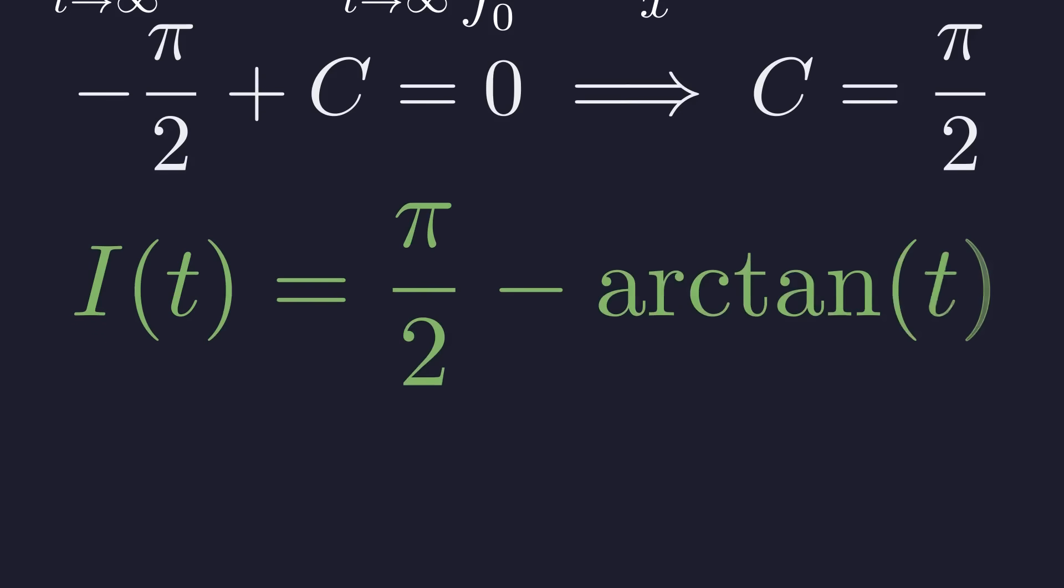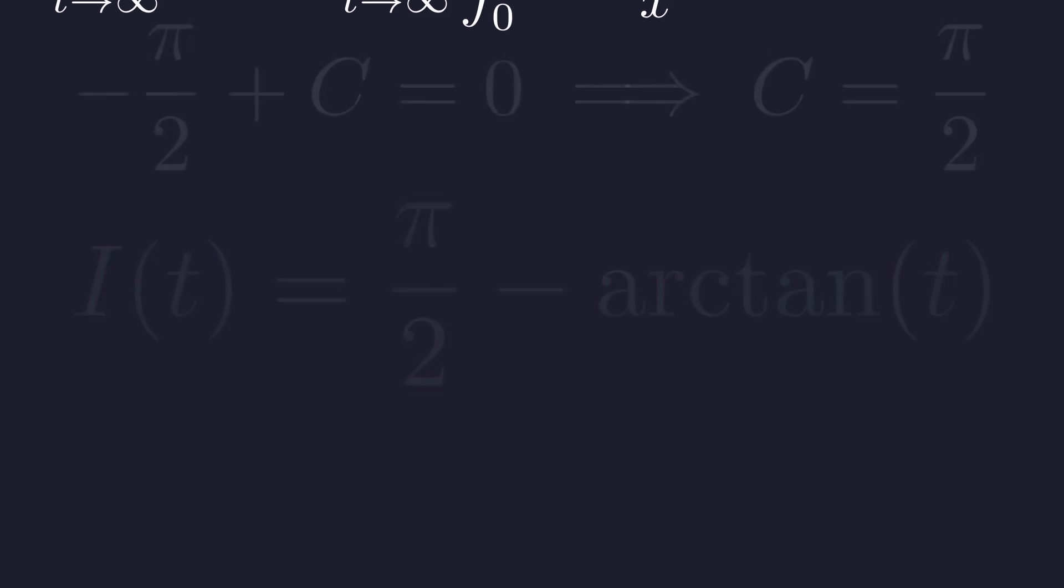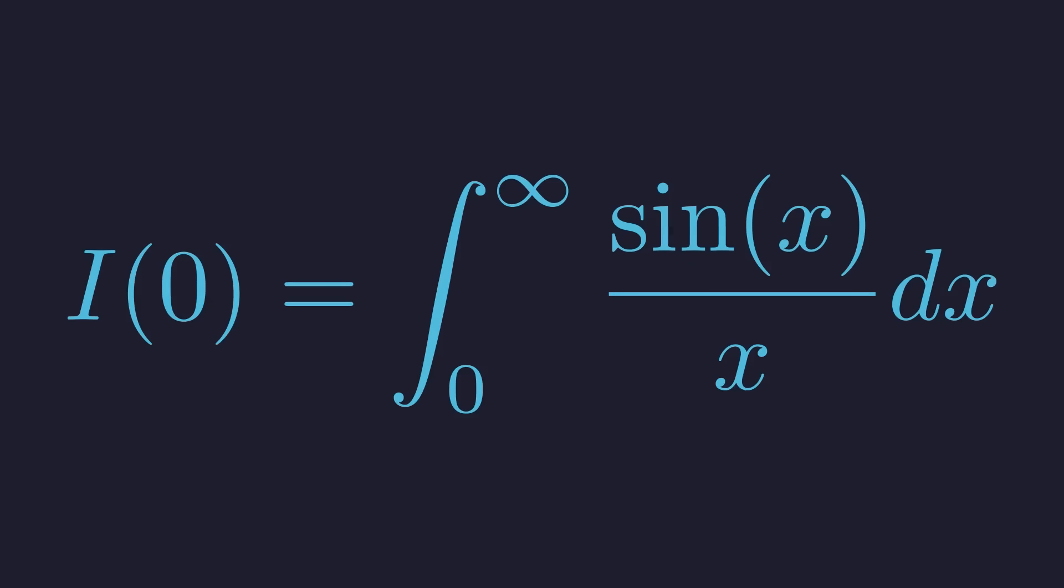We have now found the complete expression for our function. I of t is equal to pi over 2 minus the arctangent of t. The moment of truth has arrived. Remember, our original integral is simply I evaluated at t equals 0. Our goal was to find I of 0, so let's substitute t equals 0 into our final expression for I of t.